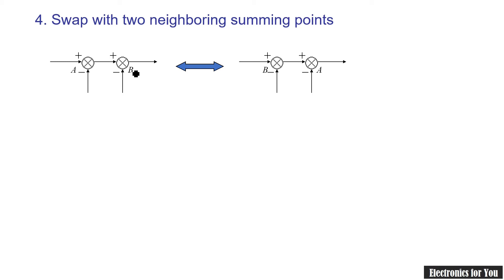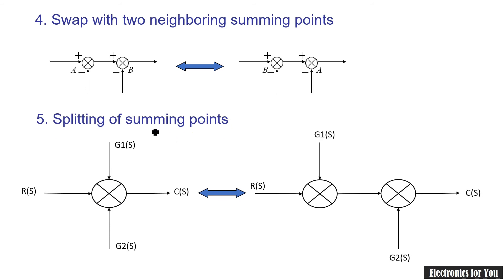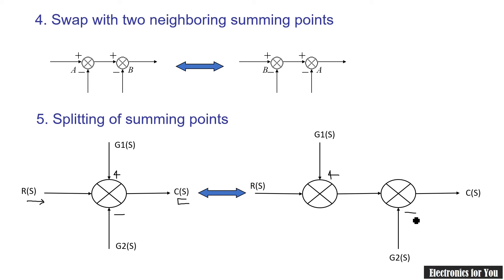The fifth rule is splitting of a summing point. If a summing point has inputs R(s), G1(s), and G2(s), the input path and output path remain as they are, but the summing point is split into two different summing points. The signs remain unchanged — if G1 is positive it stays positive, and if G2 is negative it remains negative.